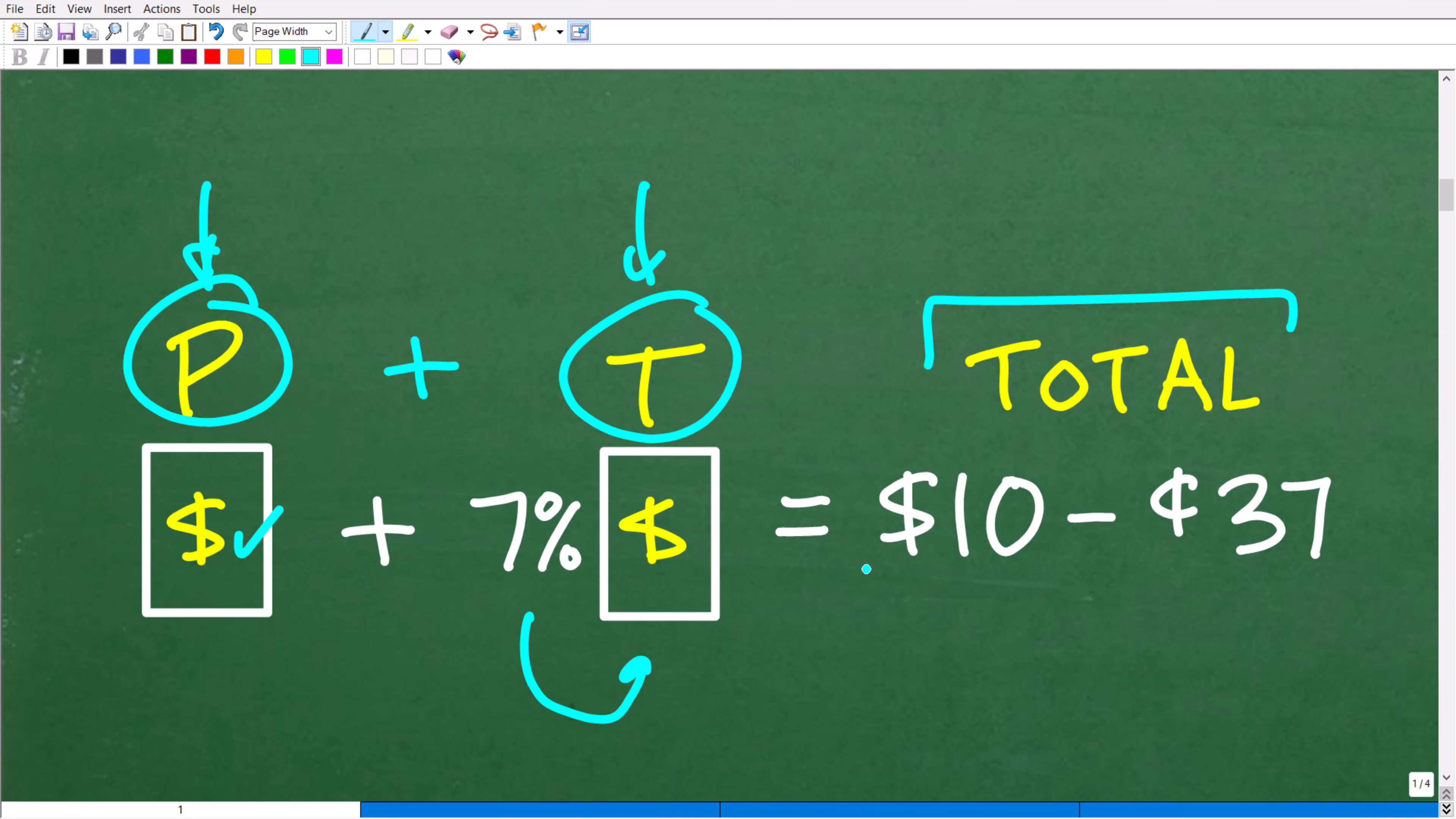Now, what is our total? Well, if you gave the cashier $10, and we got back 37 cents in change, the difference here is the total cost. So this is just the basic kind of representation of the problem. But let's go ahead and take this a step further, so we can actually solve this problem.